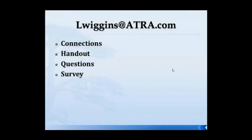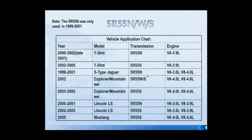Let's take a look at the 5R55 series transmissions. The 5R55 has been around for an awful long time. We've got different cousins in this transmission family: the N, the W, the S, and the E. Looking at a chart showing the N, W, and S — it's used in multiple applications with multiple engines, everything from a V6 3-liter all the way up to a V8 4.6-liter. It's a pretty common transmission in the repair industry.